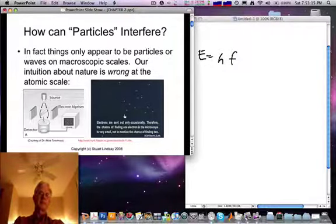Electrons are sent out only occasionally. Therefore, the chance of finding one electron in the microscope is very small, not to mention the chance of finding two.